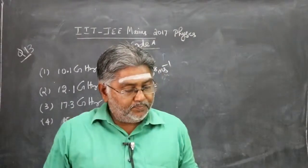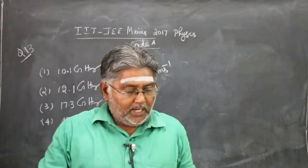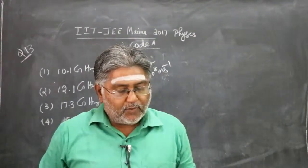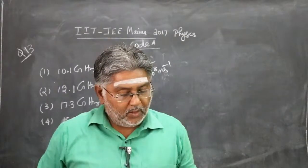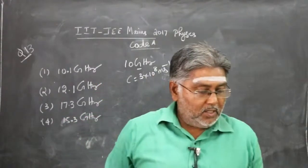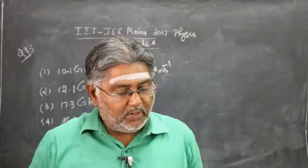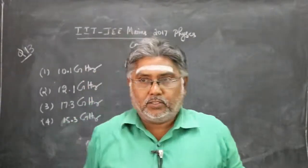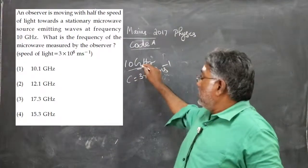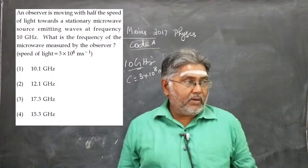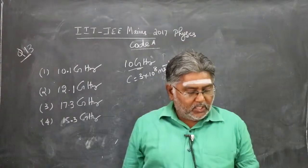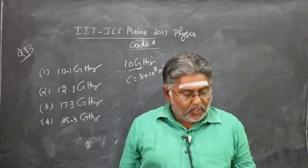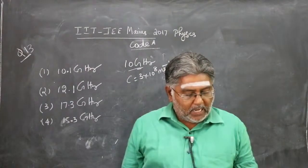Next question: an observer is moving with half the speed of light towards a stationary microwave source emitting waves at frequency 10 gigahertz. What is the frequency of the microwave measured by the observer?